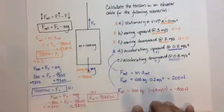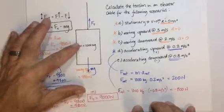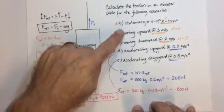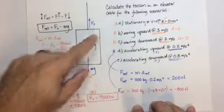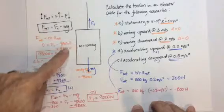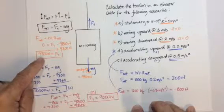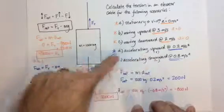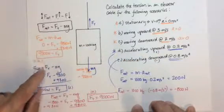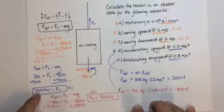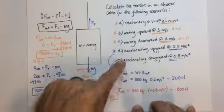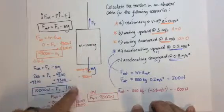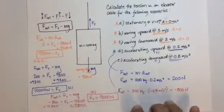This makes sense if you look at it. To hold the elevator completely stationary — no velocity, no acceleration — the tension force equals mg, which is 9,800 newtons. It makes sense that to accelerate it upward we need more than 9,800, and we get 10,000. To accelerate it downward, we need a little less than 9,800, and we get 9,000.